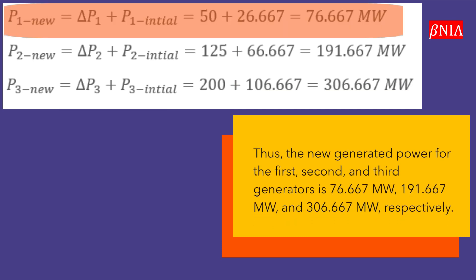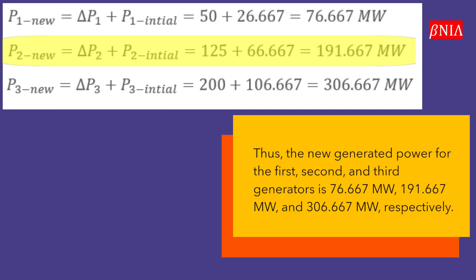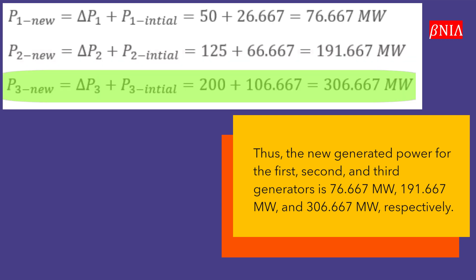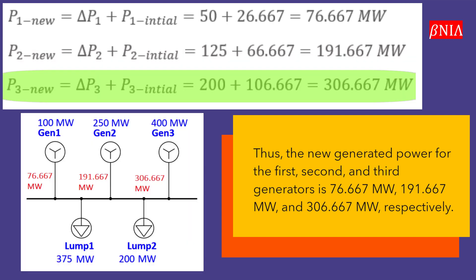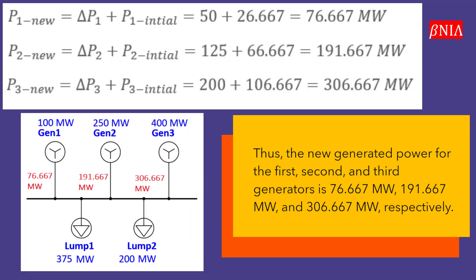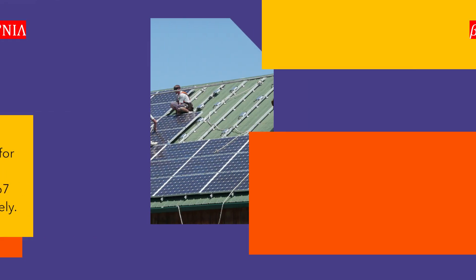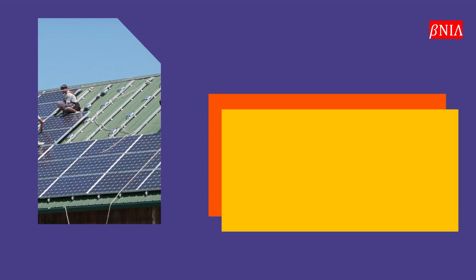Thus the new generated power for the first, second, and third generators is 76.667 megawatts, 191.667 megawatts, and 306.667 megawatts respectively.